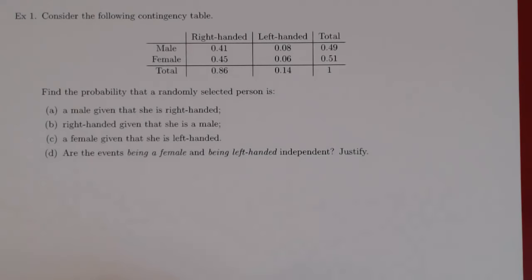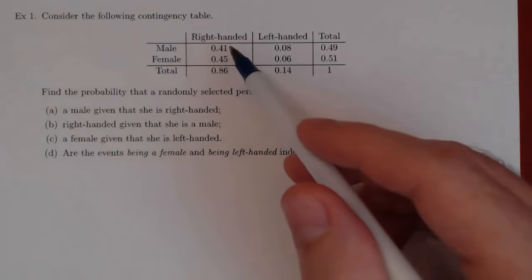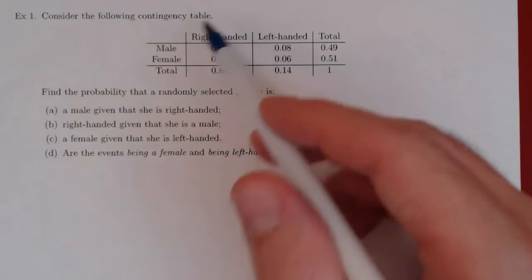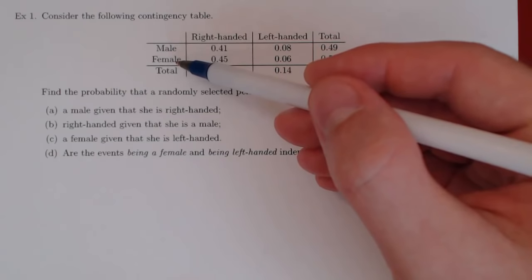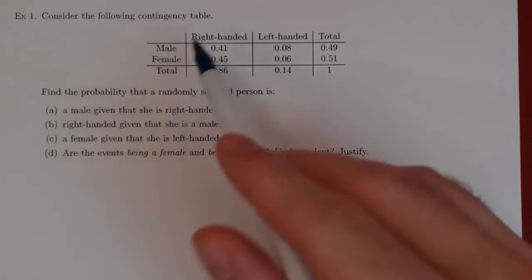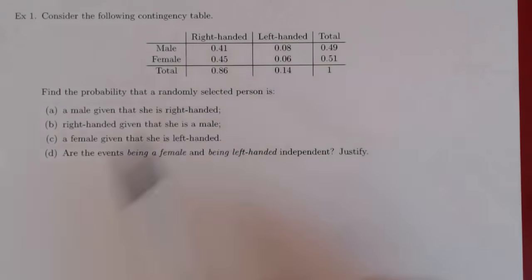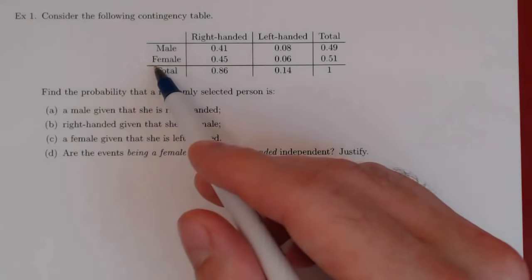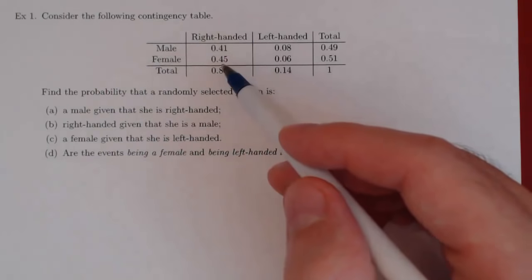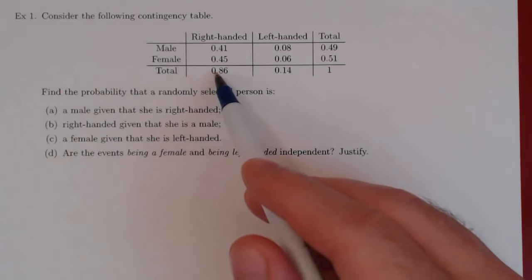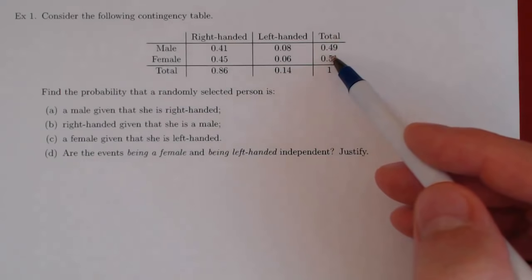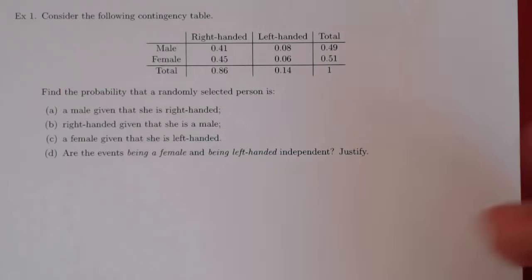Here's the first example on conditional probability. Suppose that we sampled people and organized the data in the following table called a contingency table. We've arranged the data according to whether the person was male or female, and we asked each person whether he or she was right-handed or left-handed. For example, the proportion of our sample that were female and right-handed is 0.45. We have column totals and row totals, and of course it has to add up to 1, which means this is 100% of our sample.